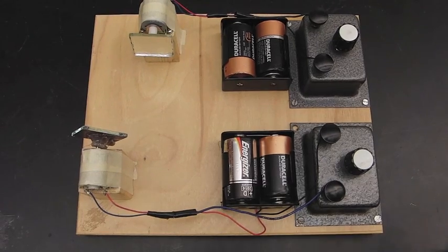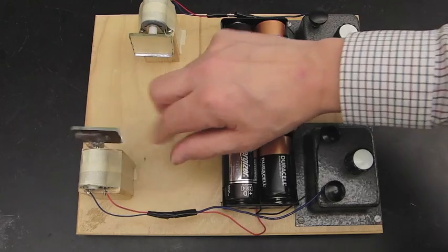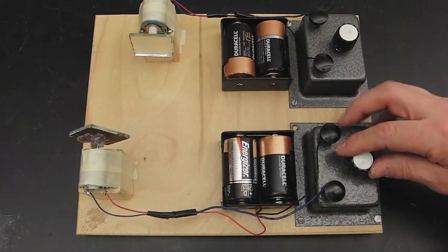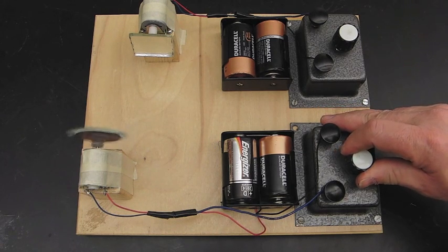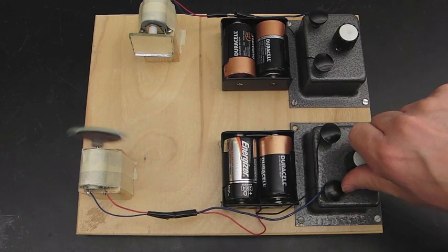Two motors are mounted onto a base, and each motor will spin a small mirror. Each motor has its own speed control and can vary anywhere from being stationary up to about 8,000 RPMs.